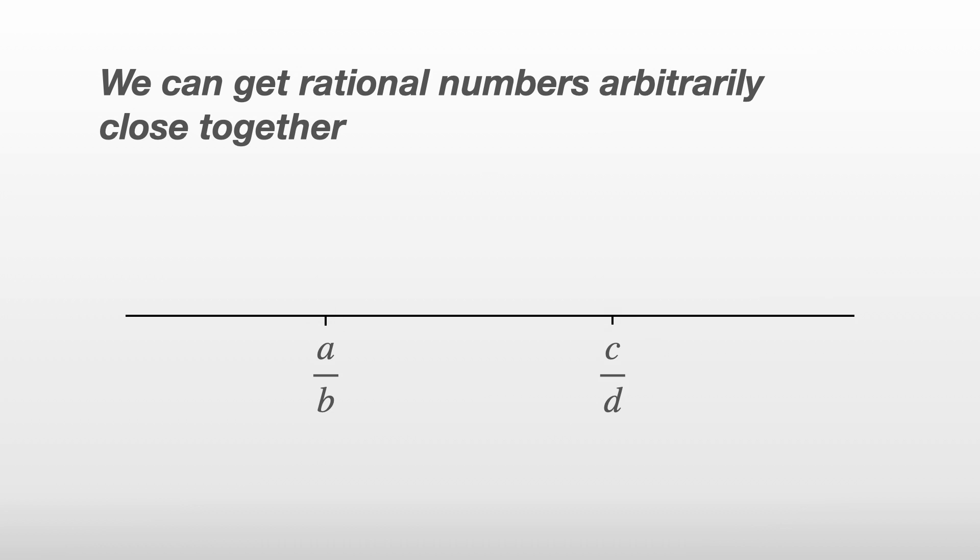We can actually find another rational number halfway between them by adding them together and then dividing by two. We can even use the same trick to get another rational halfway between a over b and the new one. And carrying this on an infinite number of times will get us infinitely close to a over b.